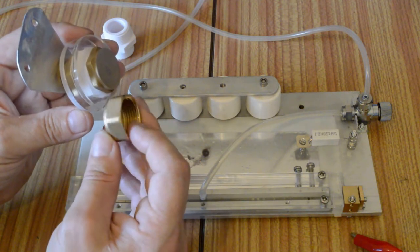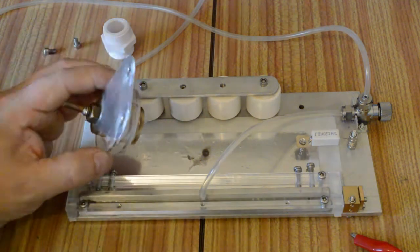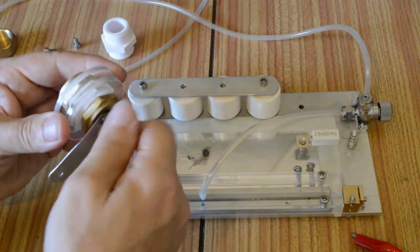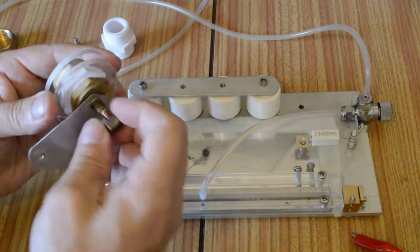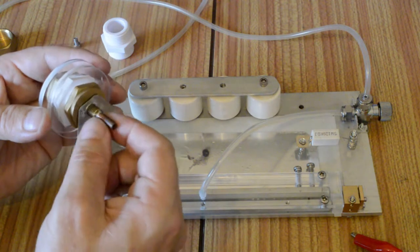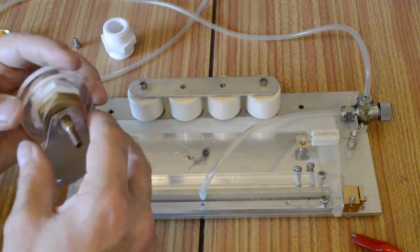Let's pull the spark gap apart. All the fittings, all the metalwork, is brass and copper - brass bolts, copper tubing, and an aluminium connection for the dumping capacitors.